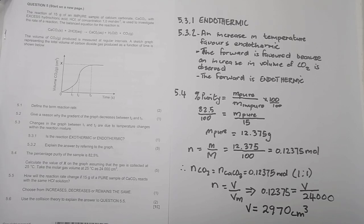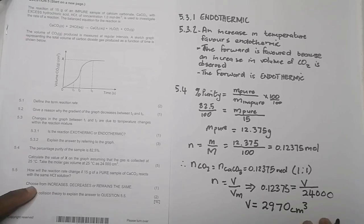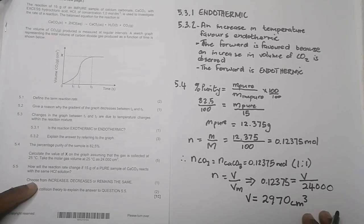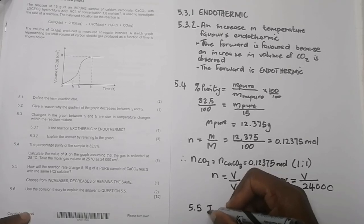The next question asks how the reaction rate will change if 15 grams of a pure sample of calcium carbonate reacts with the same hydrochloric acid solution — choose from increase, decrease, or remain the same. For 5.5 I would say it would increase, even though the increase would be slight.